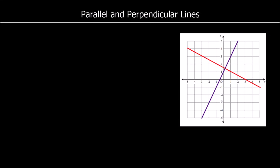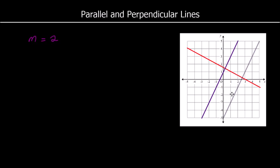Parallel and perpendicular lines. Parallel lines have the same gradient — they go in the same direction. Looking at the purple line, for every one it goes across, it goes up two. So the purple line has a gradient of two. Any other line with a gradient of two, no matter where it is on the graph, will be parallel. These two purple lines are parallel — they've both got the same gradient.